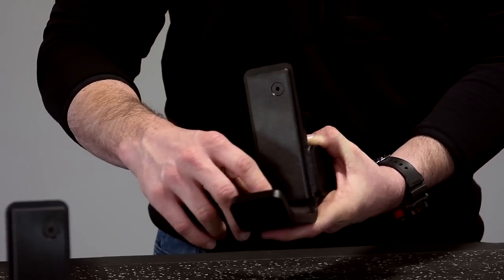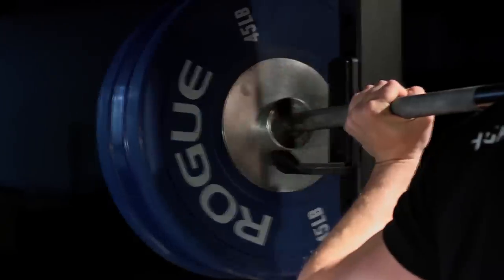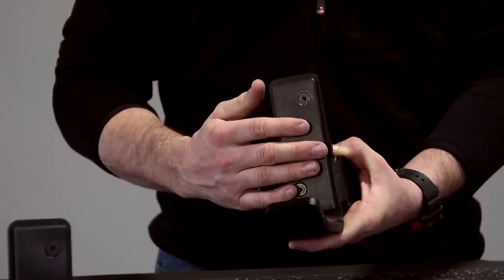We've put in heavy duty UHMW plastic that fits into the bottom and into the top along this back side. So as you rack the bar back in there, the barbell hits this surface, you're not going to damage the knurl in the bar.